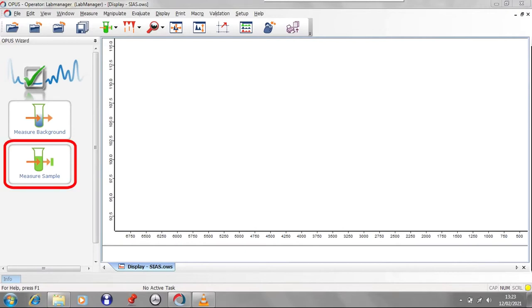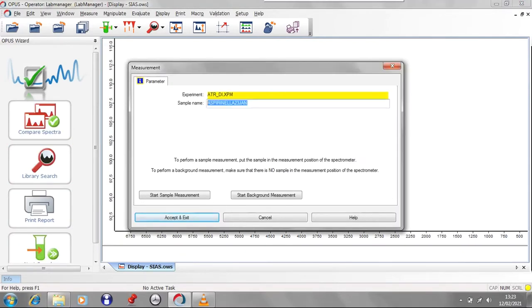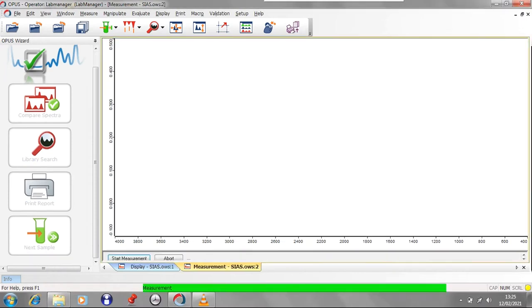Click on Measure Sample. Don't alter the experiment name but set the sample name to your own choice. Then press Start Sample Measurement. The window will close and the spectrum window will open. This is showing you your spectrum but isn't saving the data yet. Press Start Measurement in the bottom left-hand side of the spectrum window to begin recording the spectrum.